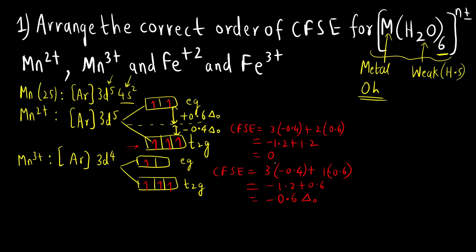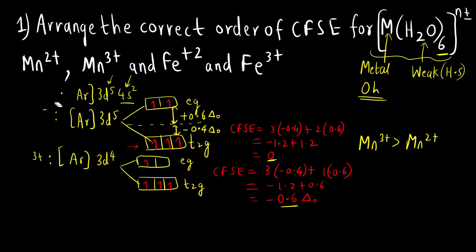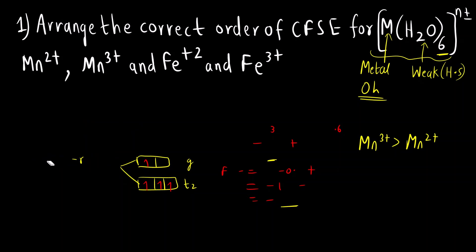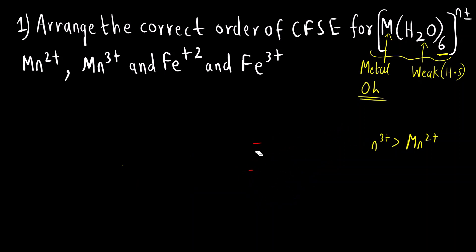This is very important. When you compare CFSE values you don't consider the negative sign — you compare only the magnitude. Here Mn²⁺ gives CFSE = 0 and Mn³⁺ gives 0.6, so CFSE of Mn³⁺ is greater than CFSE of Mn²⁺. Similarly, now we can find out for iron.